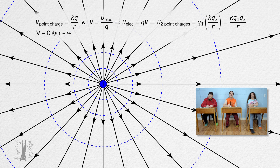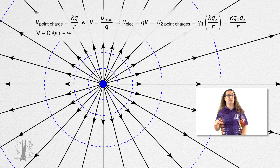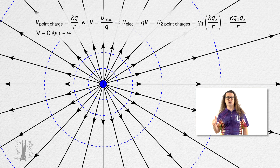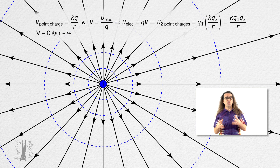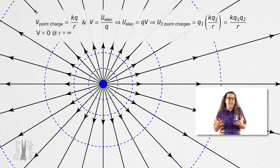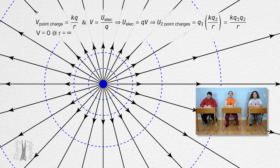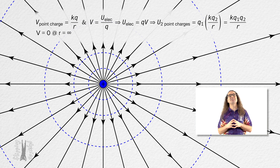Thank you. Because electric potential and electric potential energy are scalar values, determining those values for multiple particles uses superposition — you just add all the values together. Thank you very much for learning with me today. I enjoy learning with you.